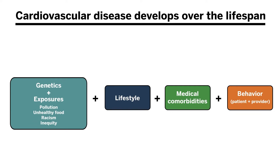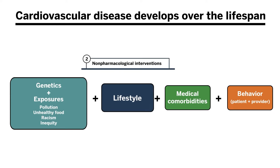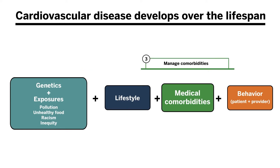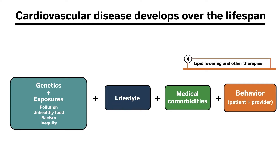The guideline for the primary prevention of coronary artery disease is laid out in a similar structure. In the first step we assess risk; in the second step we use non-pharmacological interventions; in the third step we manage comorbidities, which is one of the things the medical profession does best; and in the fourth step we prescribe lipid-lowering and other therapies to reduce cardiovascular risk specifically.